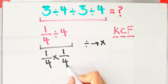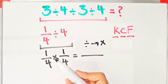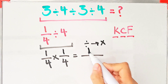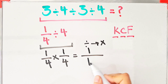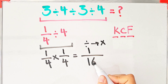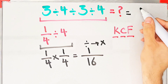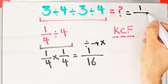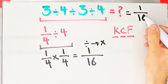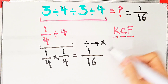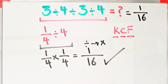Now we do the multiplication: 1 times 1 equals 1, and 4 times 4 equals 16. The final answer of this question equals 1 over 16. Thanks for watching guys, please subscribe to the channel and leave a comment. Goodbye!